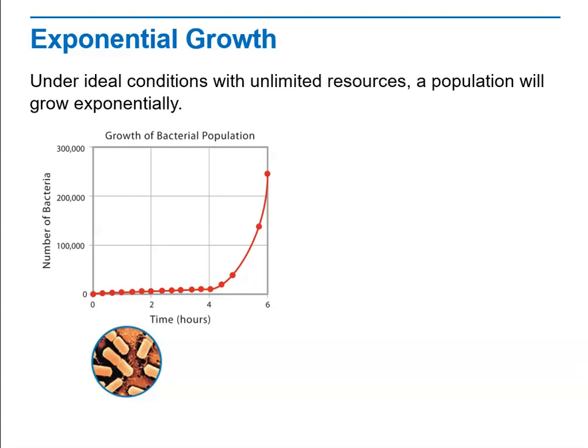Exponential growth occurs when conditions are ideal, and sometimes conditions are ideal when a population is new to an environment. Remember, we started out this unit talking about invasive species. Sometimes when an invasive species comes in, it's protected from predators because there are no predators adapted to consuming that species. So often these invasive species experience exponential growth, growing very rapidly and competing with the native species.